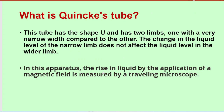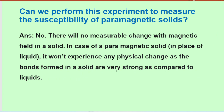What is Quincke's tube? As seen earlier, it is U-shaped with two arms — one with a very narrow width compared to the other. The change in the liquid level of the narrow limb does not affect the liquid level of the wider limb. In this apparatus, the rise in the liquid level caused by the application of a magnetic field is measured by a traveling microscope.